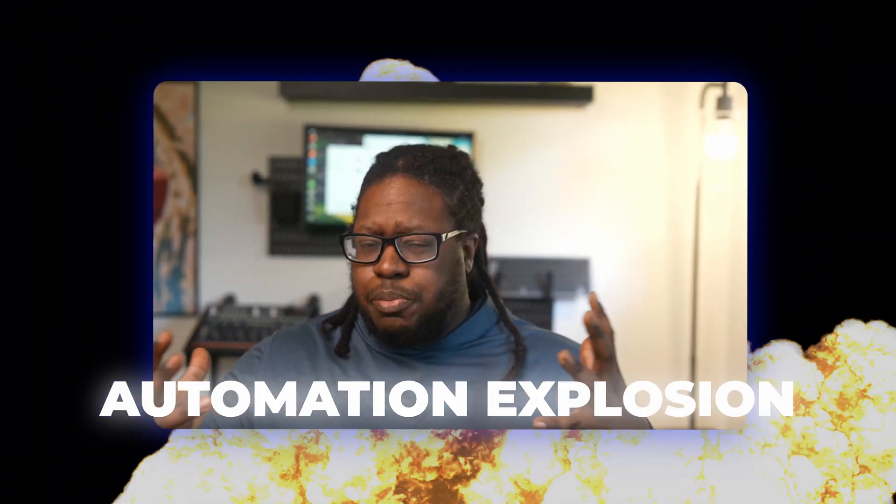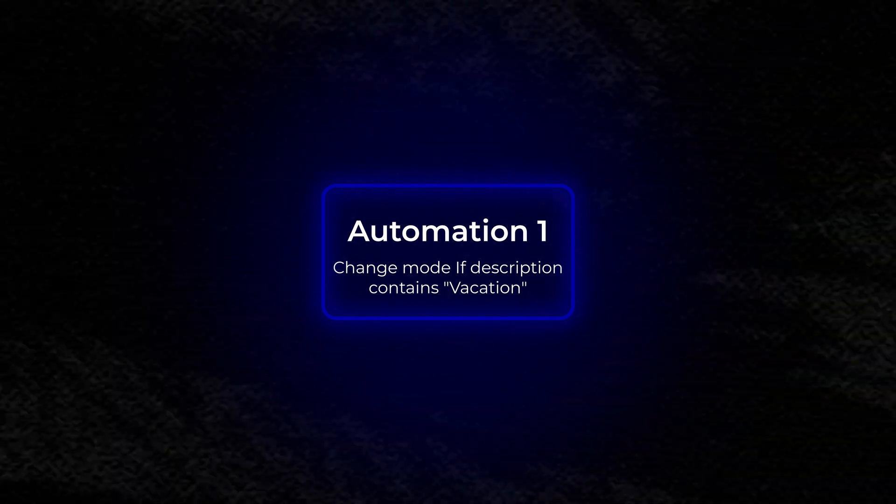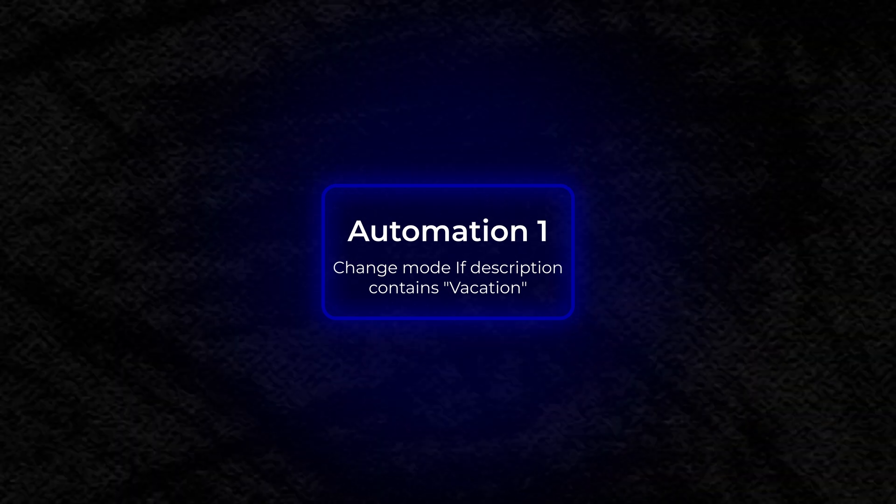Now that we have AI, I have a better solution, which has two extreme benefits. The first is that you can reuse automations and prevent automation explosion. At minimum, you would need to create one new automation for each scenario. In this case, you would need an automation that would look at the calendar title and then change the mode of the home when the text is seen.